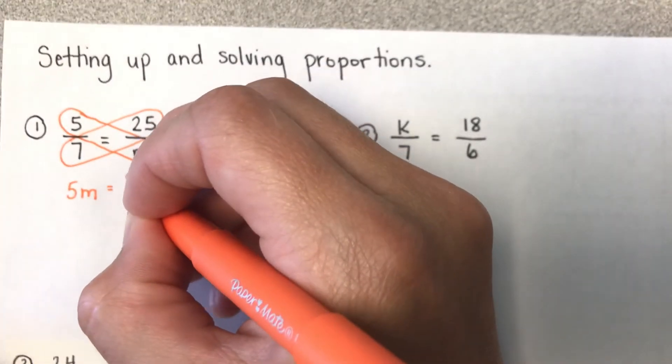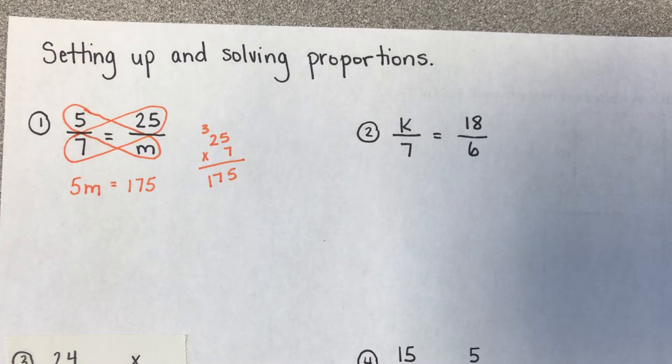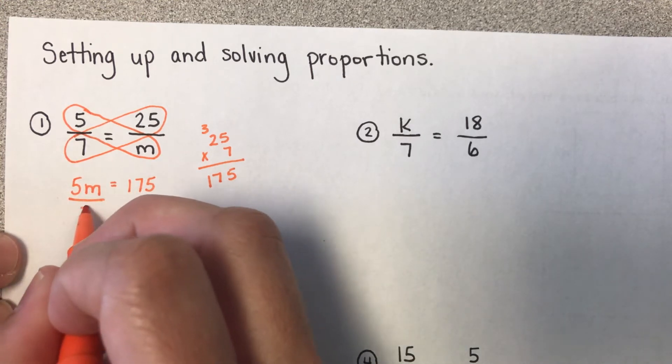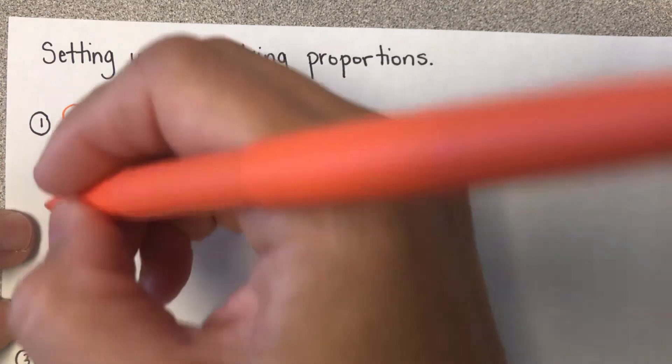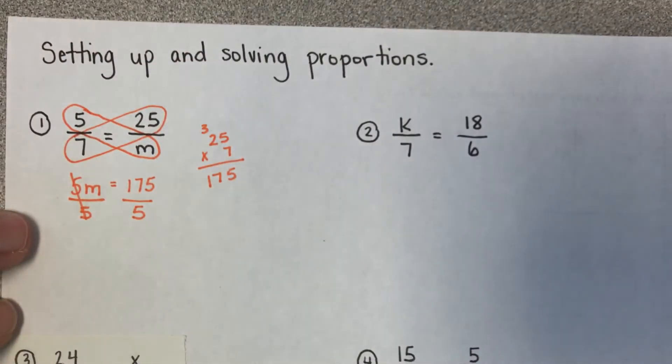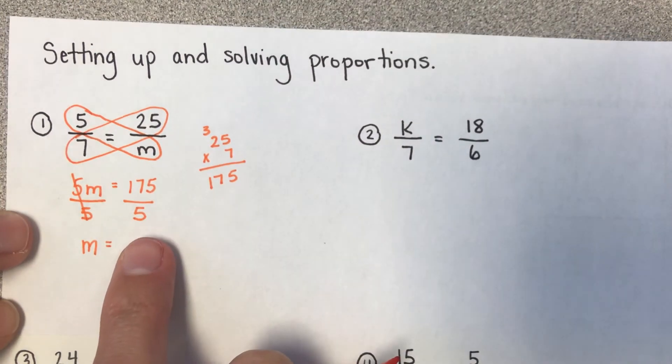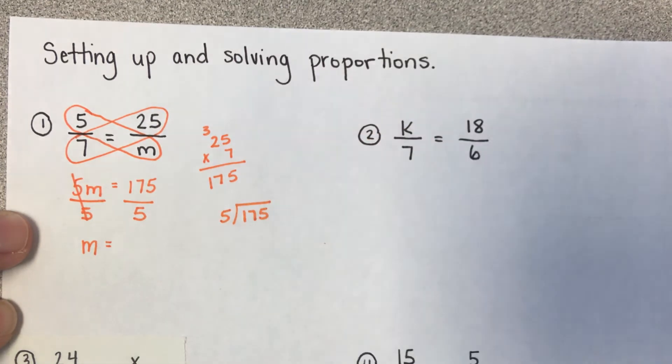So that goes over here. And so now I know that something times 5 is going to give me this 175. I just got to figure out what that something is. So I need to do the inverse operation. So instead of doing 5 times m, I'm really going to divide by 5.